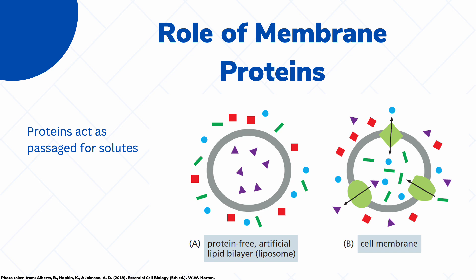First, let's take a look at the role of membrane proteins in the transport of various solutes. These membrane proteins, which account for almost 50% of the mass of the cell membrane, act as passages for our different solutes. In this figure, you can see an example of a protein-free artificial lipid bilayer, also known as a liposome. In this example, you can see that there are no proteins.